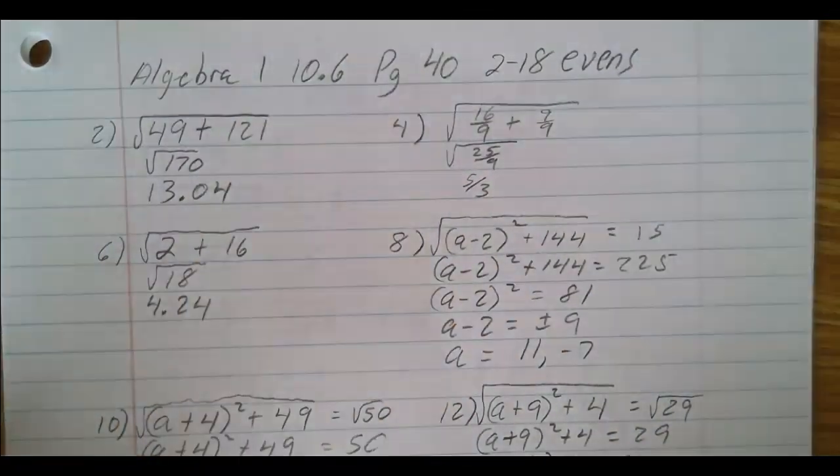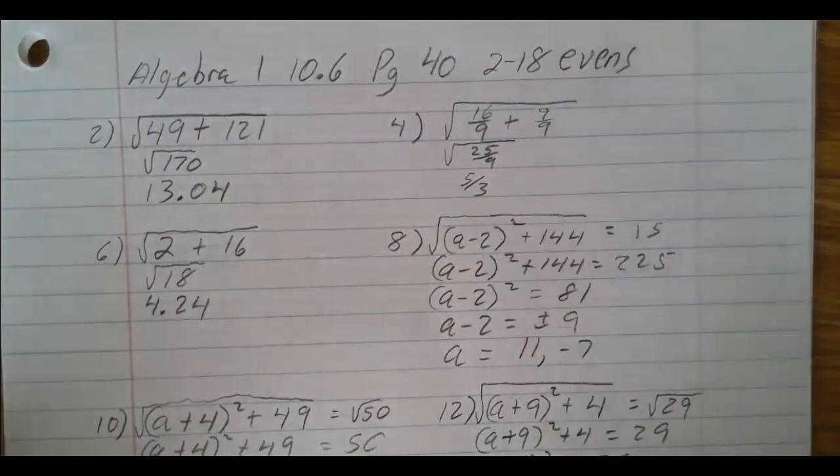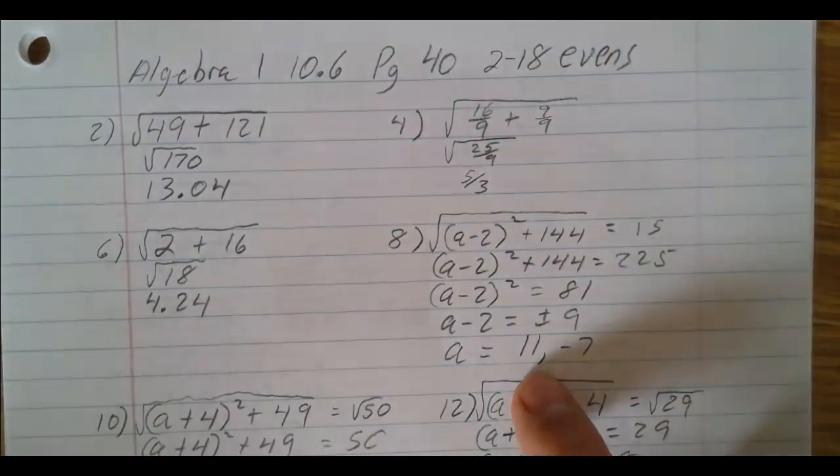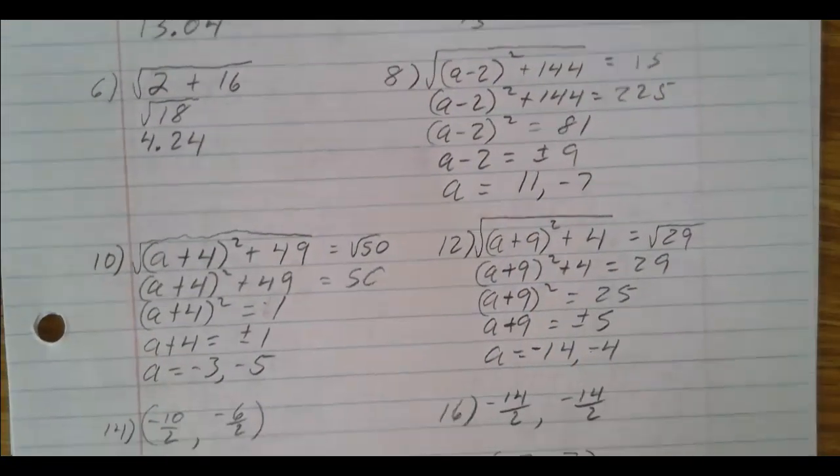Number 2 is 13.04, 4 is 5 thirds or 1 and 2 thirds, 6, 4.24, 8, 11, negative 7.